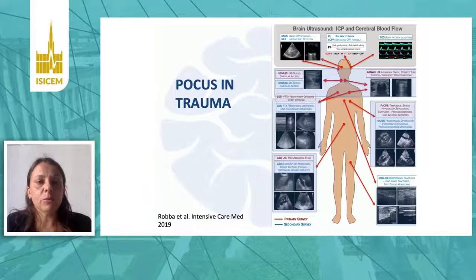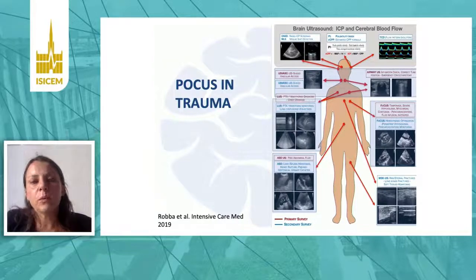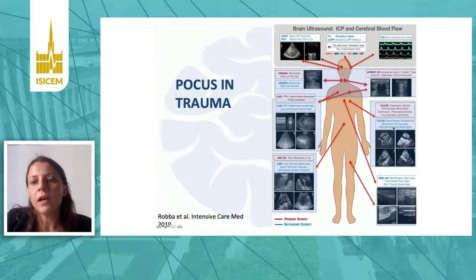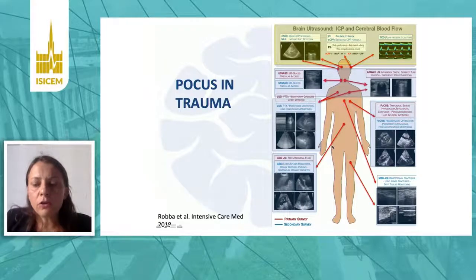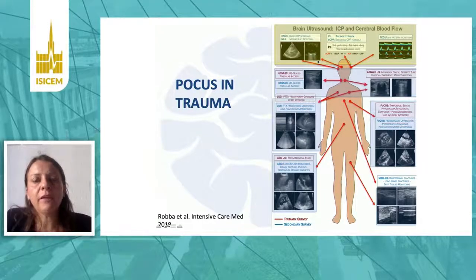It is very important that brain ultrasonography applications are brought into clinical practice. We normally now use ultrasound in trauma — when a polytrauma patient arrives, we perform the POCUS protocol: ultrasound-guided vascular access, airway assessment, hemothorax, lung contusions, lung ultrasound, cardiac ultrasound, and assessment for free abdominal fluid. According to what we've discussed, we don't even have to change the probe — we simply place it on the brain to get additional information about cerebral physiology.